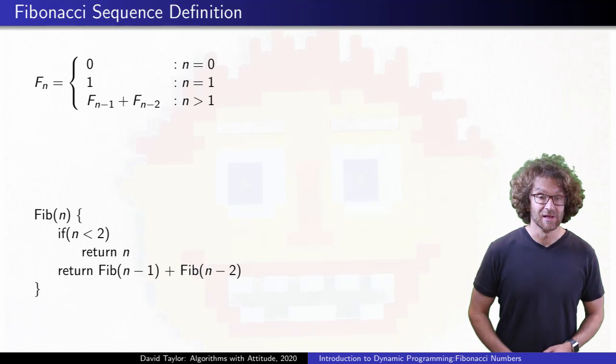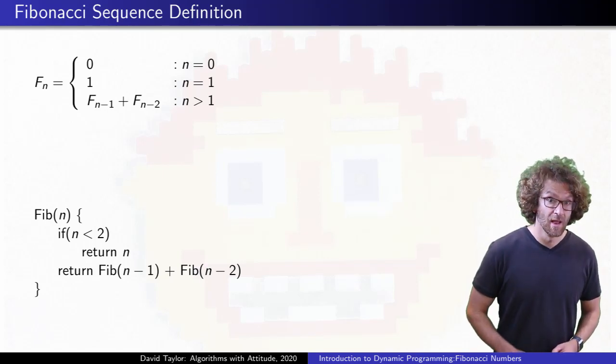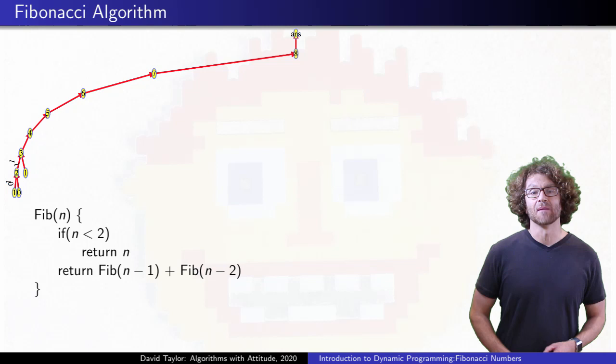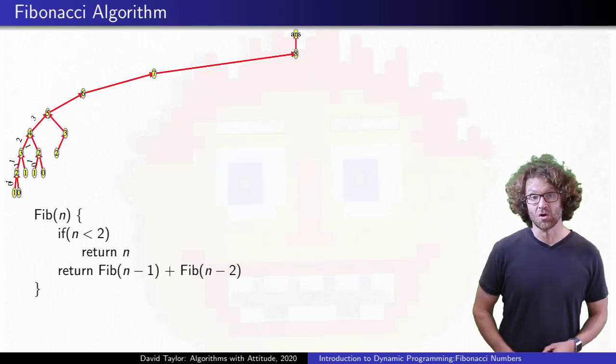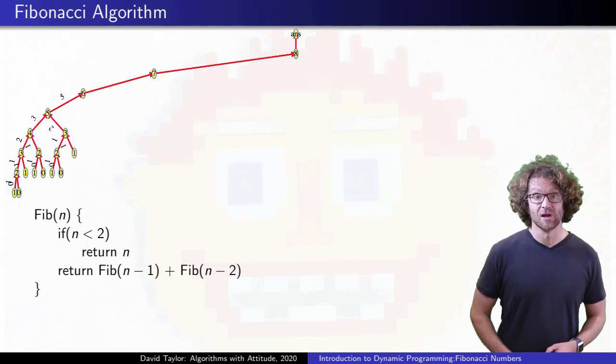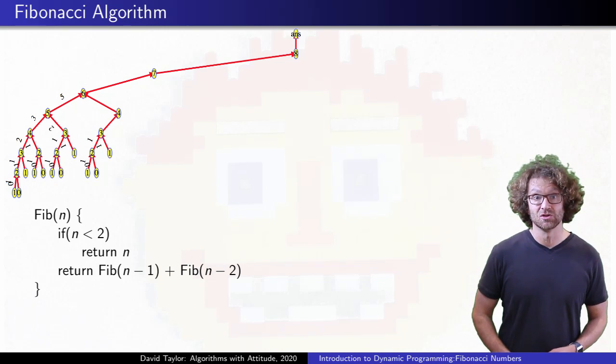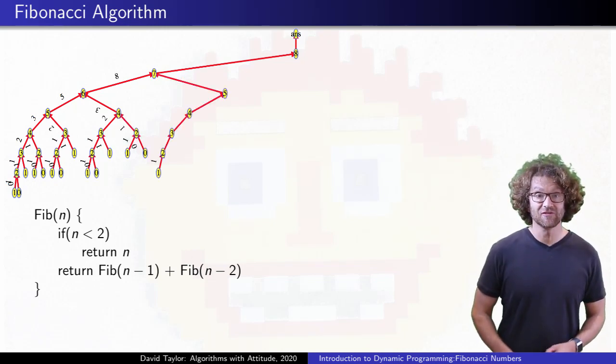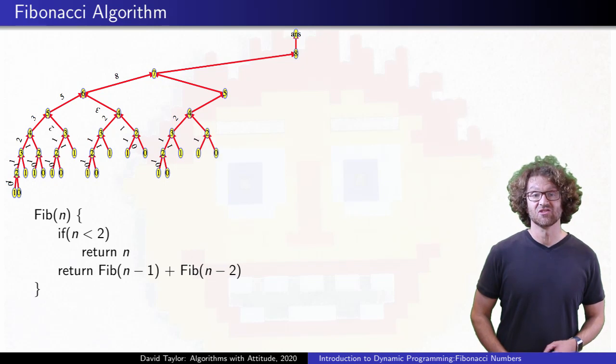But there's a problem, it's slow. Let's take a look at the recursion tree running on the number 8. If we make the call to the previous Fibonacci number first, and put that into the left of our recursion tree, the left spine of the tree has length 7.